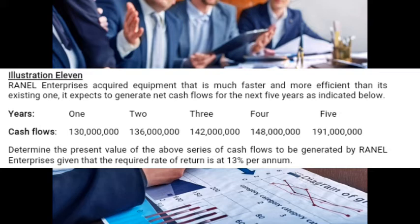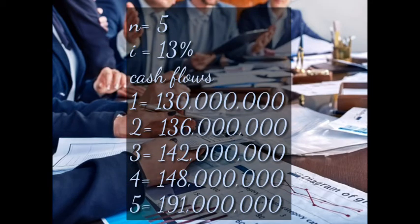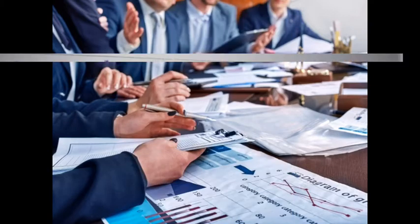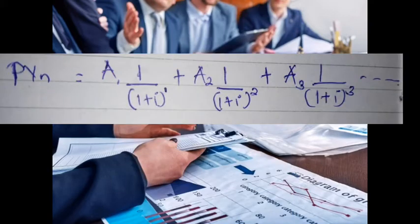From our question, n is five years, the interest rate is 13 percent, and cash flows are: year one — 130 million, year two — 136 million, year three — 142 million, year four — 148 million, year five — 191 million. To calculate the present value, we are going to use a table.